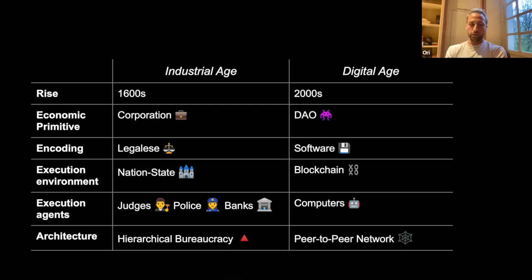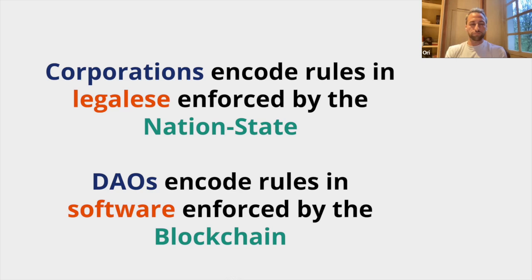We're at the beginning of the digital age, where this new economic primitive — a more open set of templates for doing economic activity — has the encoding of the organization in software, and the execution environment is a distributed database like a blockchain. The actual execution of those rules happens autonomously through the validators of the underlying chain, and the logic here is computer networks and peer-to-peer design. Corporations have their rules encoded in legalese and enforced by the nation state; DAOs have their rules encoded in software and autonomously executed on a computer network.